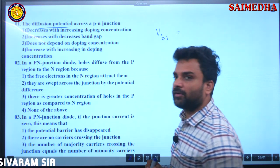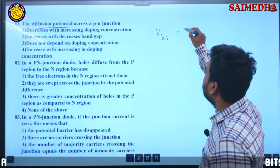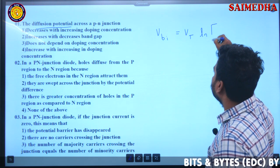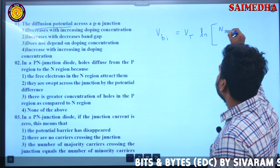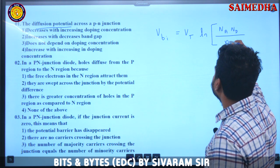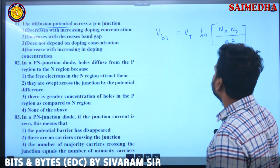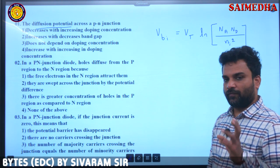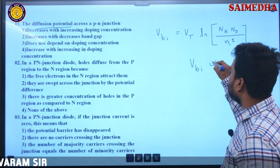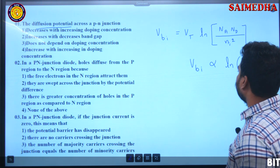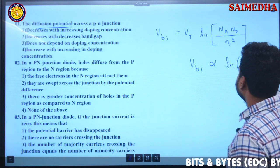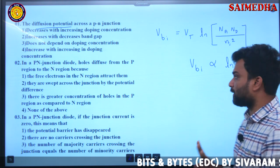What is VBI formula of a P-N junction diode? VT ln of Na Nd by Ni square. So VBI is directly proportional to natural logarithm of doping concentration, it is not inversely proportional, directly proportional.